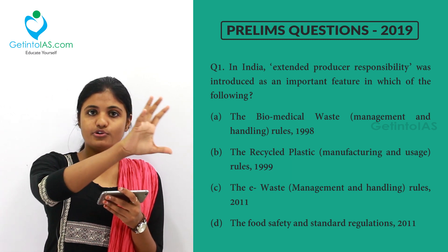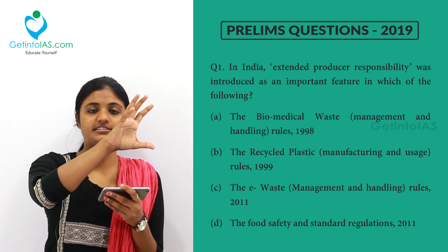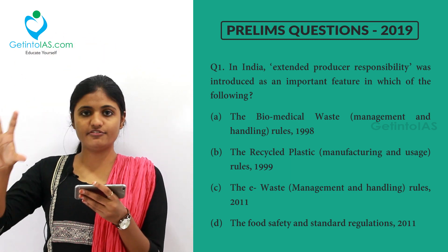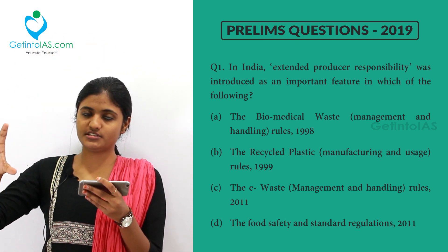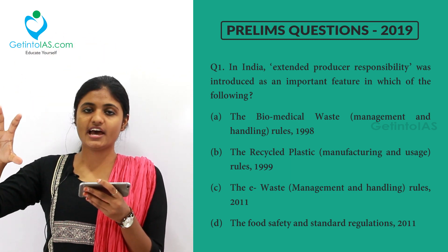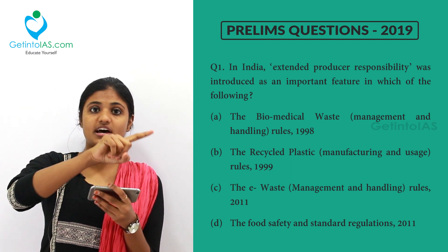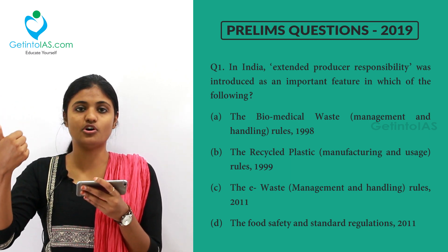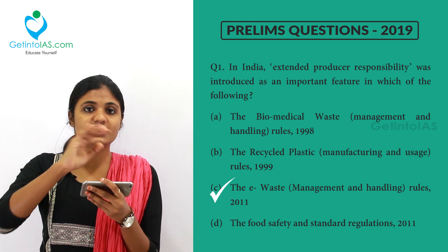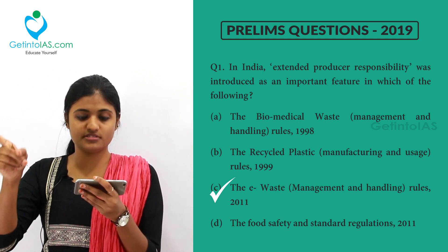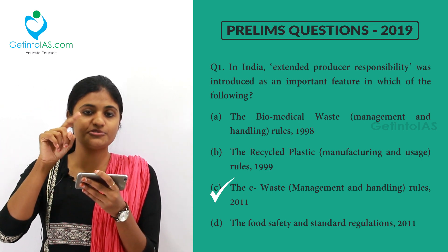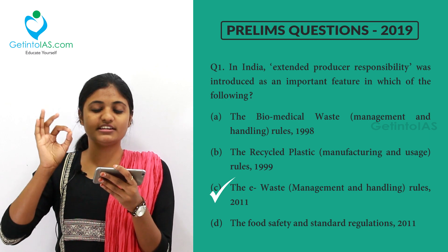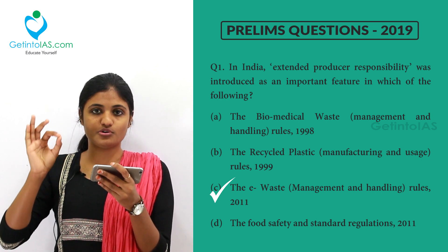There are producers for producing electronic items. They sell to the consumer, and after the consumer has used them for certain years, the producer has the responsibility for the disposal of that waste. So extended producer responsibility relates to option C — the e-waste management and handling rules of 2011.